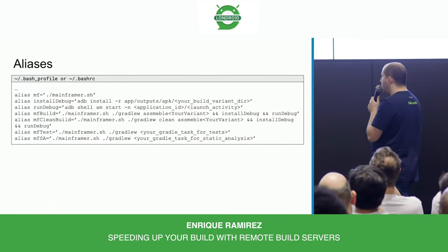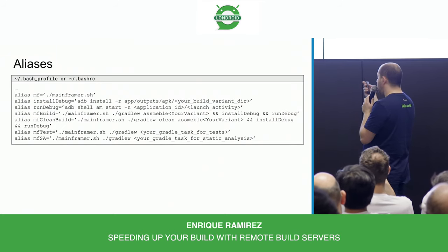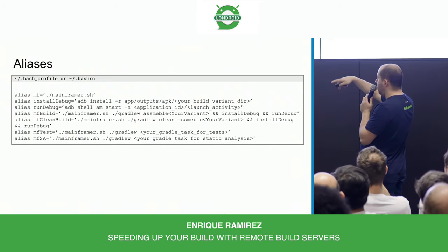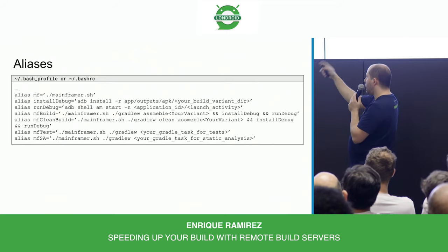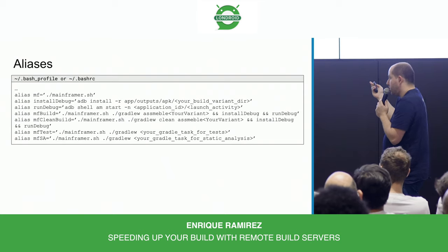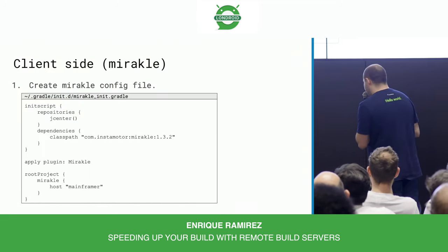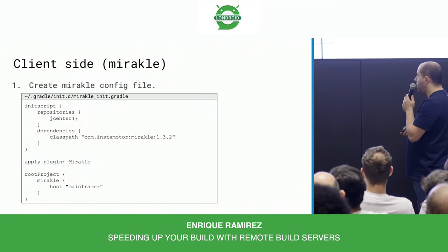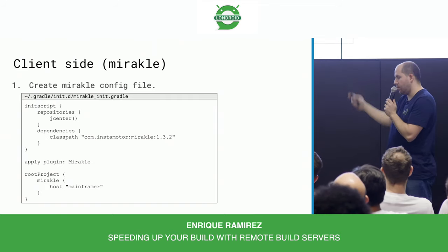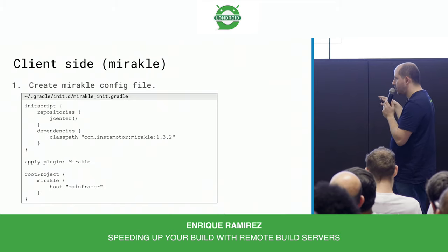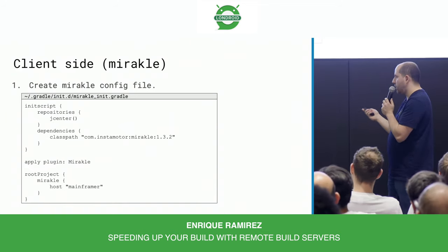Aliases are optional but useful - they're command line shortcuts so you don't have to type those massive commands. For example, I have one called install_debug that does ADB installation, one that runs the app, and a combined one called mfbuild that does building, installing, and running all in one command. For Miracle, you just click the green triangle - it's quite easy. You add configuration in Gradle where the host has to match the SSH config file. Miracle is compatible with Mainframer if you have it in your project, or you add the ignore files separately.